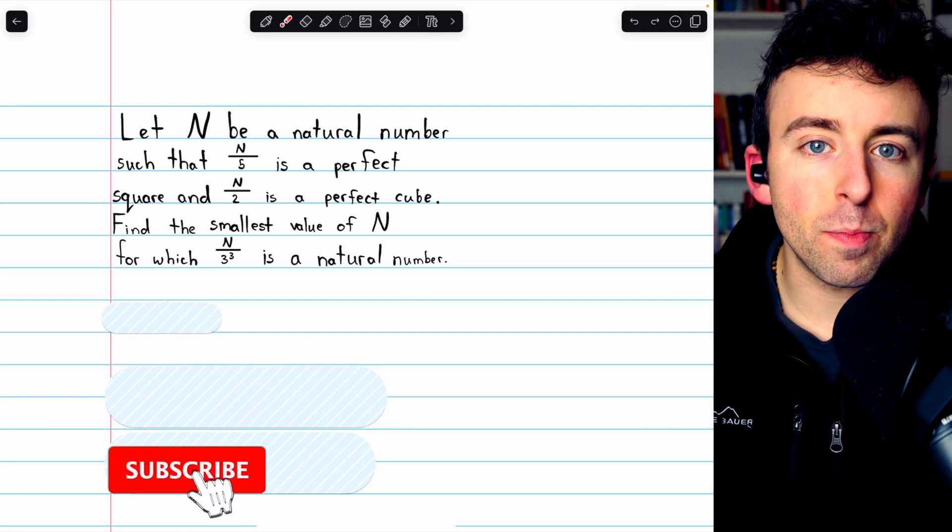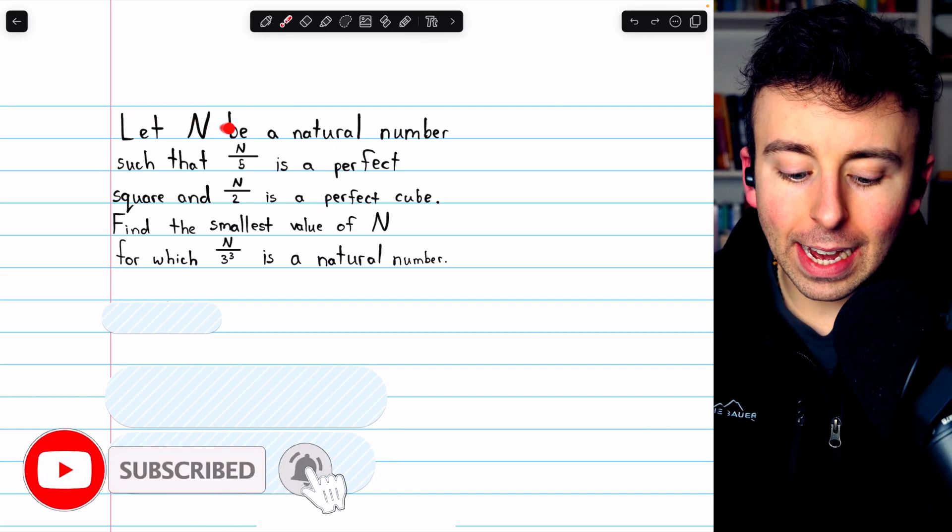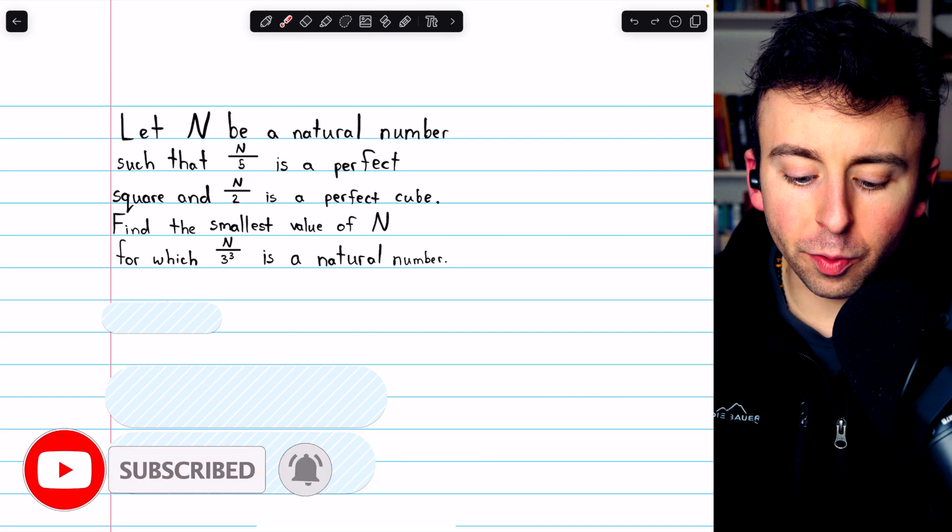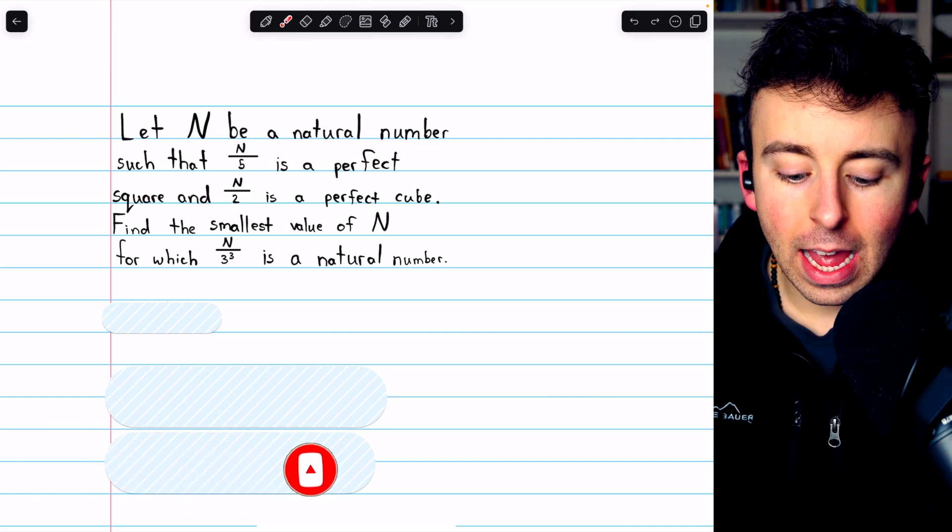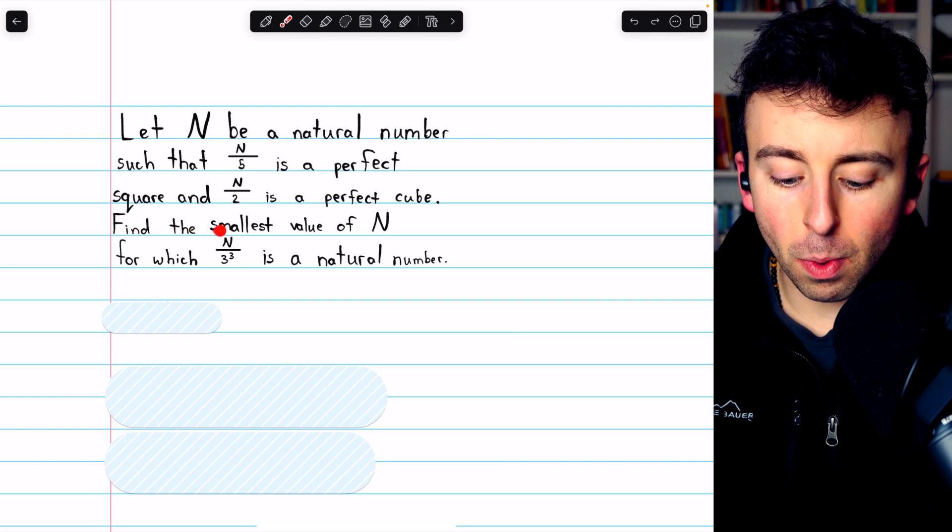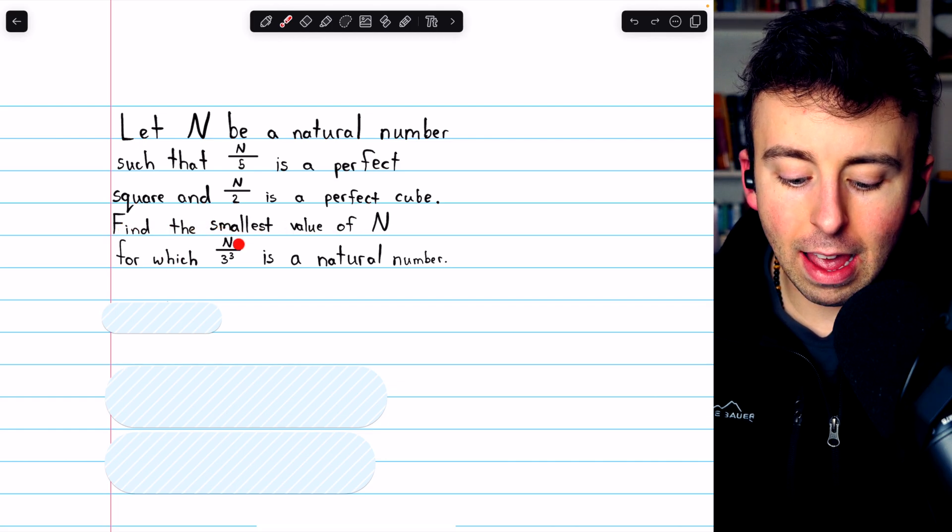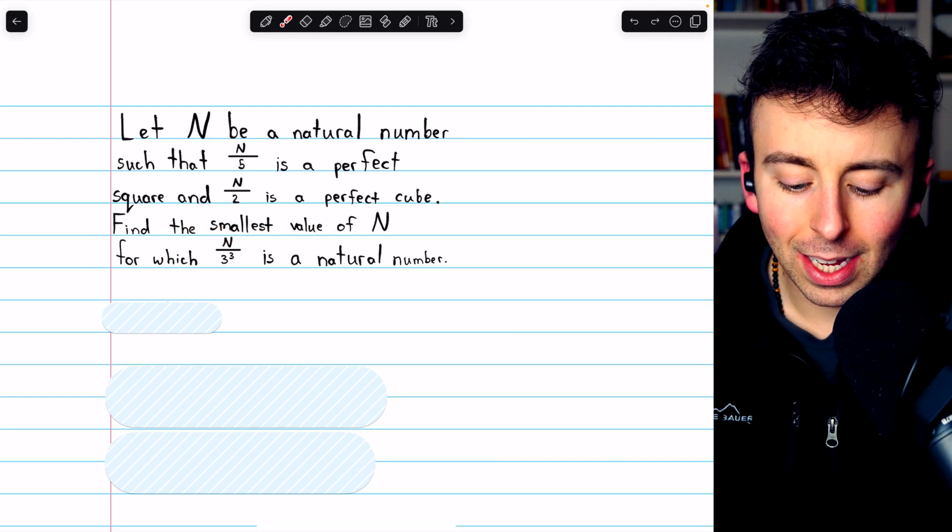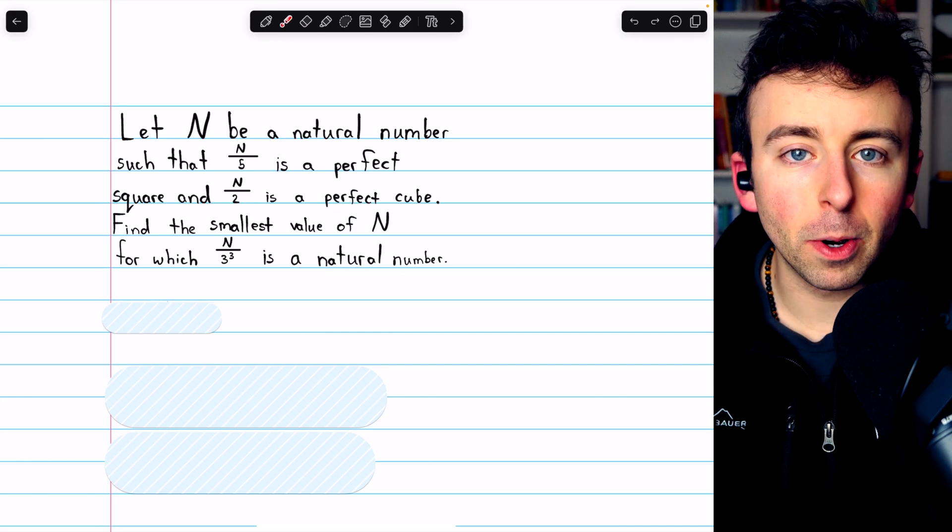Let's do a quick number theory problem. Let N be a natural number such that N over 5 is a perfect square, and N over 2 is a perfect cube. Find the smallest value of N for which N over 3 cubed is a natural number.